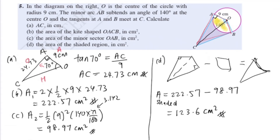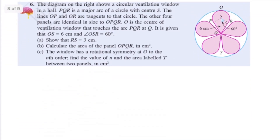Question 6 is a bit more challenging. The diagram shows a circular ventilation window. BQR is a major arc of a circle with center S. Line OB and OR are tangents. The four panels are identical. The length of OS is 6 cm, angle OSR is 60 degrees. Show that RS equals 3 cm.